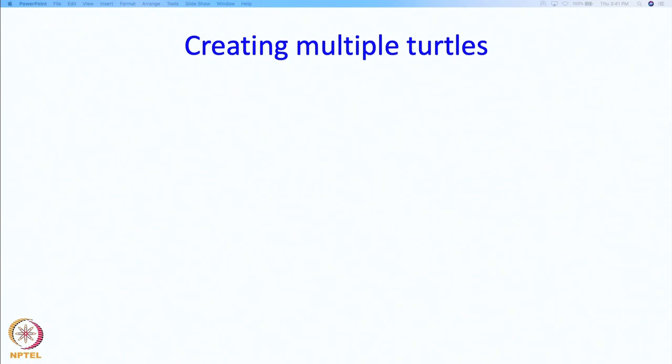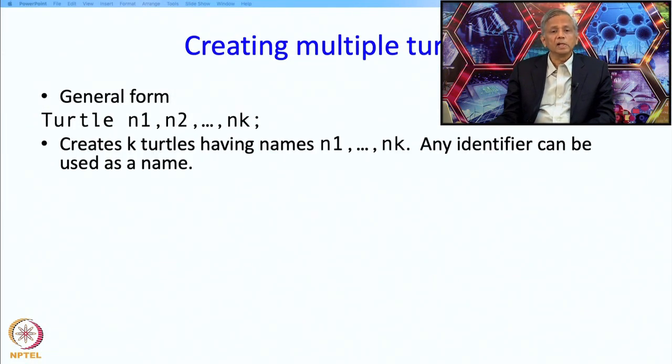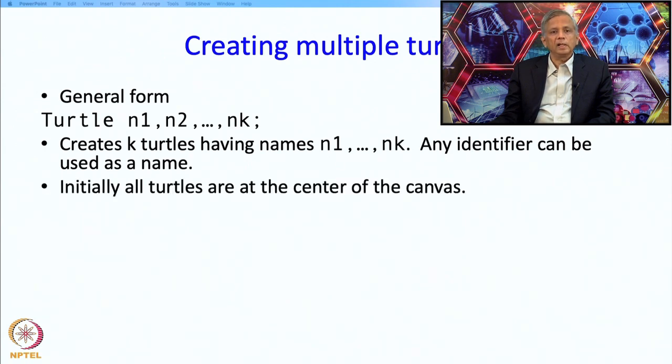The general form to create many turtles is turtle n1, n2, nk where n1, n2, nk are the names for the turtles you're going to create. This creates k turtles having names n1 through nk, and any identifier can be used. Initially all turtles are at the center of the canvas and all are facing right, but the single default turtle is no longer available if you used initCanvas.